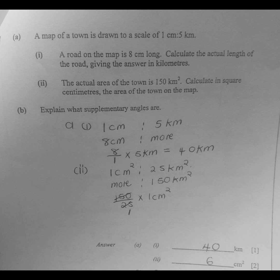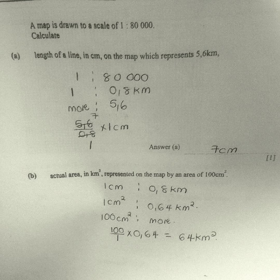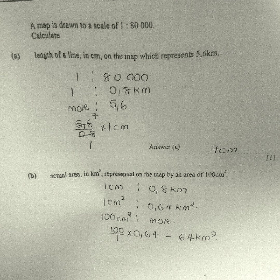We are now moving to the third question, extracted from November 2020. It says: a map is drawn to a scale of 1 centimeter to represent 80,000 centimeters. We are supposed to calculate the length of a line in centimeters on the map which represents 5.6 kilometers. What we are going to do is convert 80,000 centimeters into kilometers.